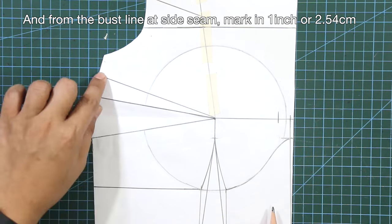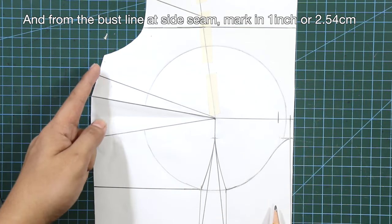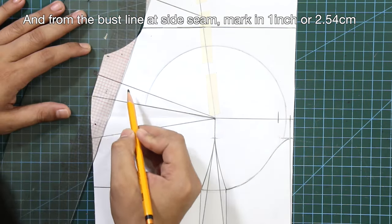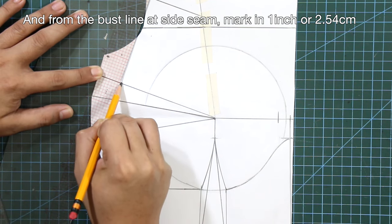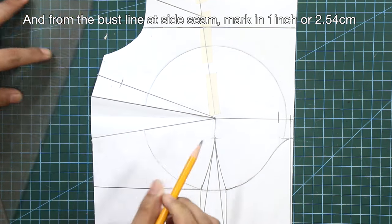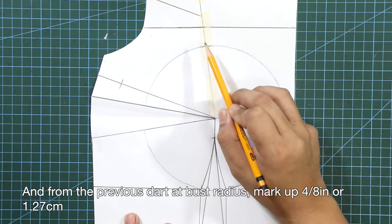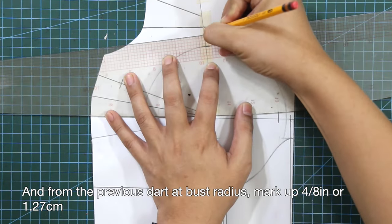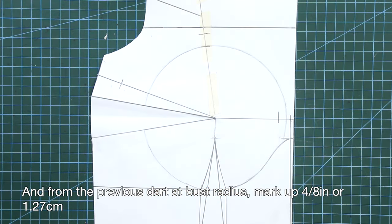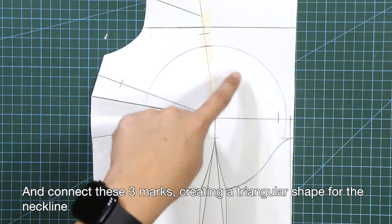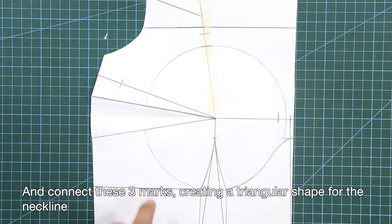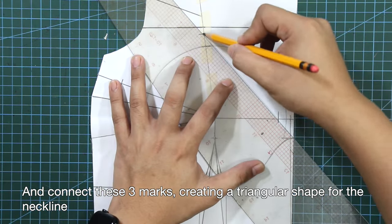From the bust line at side seam, mark in 1 inch or 2.54 centimeters. From the previous dart at bust radius, mark up 4/8 of an inch or 1.27 centimeters. Connect these three marks, creating a triangular shape for the neckline.